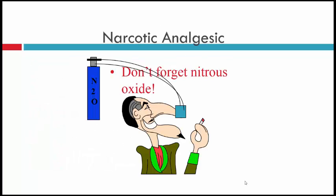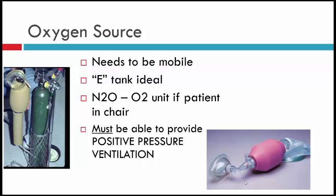Many emergency kits won't have morphine, but virtually any dental office will have nitrous oxide, which is an excellent analgesic and can be used in this setting. For oxygen sources, they should generally be mobile. The E-tank is ideal. If the patient is in the dental chair with an attached nitrous and oxygen unit, that can be used as well. In any situation we must be able to provide positive pressure ventilation, so an AMBU bag will be part of all emergency kits.